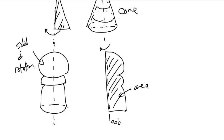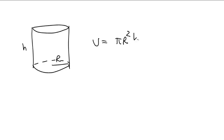The most important one for now is the cylinder. And I want you to know that a cylinder with a radius of r and a height of h, the volume is pi r squared h.